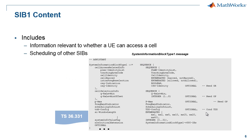So what is in SIB1? Information about the service provider associated with this eNodeB and whether the UE can access this cell, as well as information about the scheduling of other SIBs. Once this information is known, the UE can proceed to read the rest of system information according to the defined schedule.